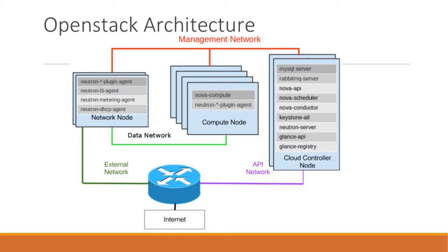OpenStack has many components. Prominent among them we have three main components: Neutron for networking, Nova for compute, and Cinder for storage. In this multi-node architecture, the controller node is where you deploy your APIs, the network node is where you deploy all the Neutron components, and the compute node is where you put your hypervisor along with some Nova components. We're going to concentrate on the network node.